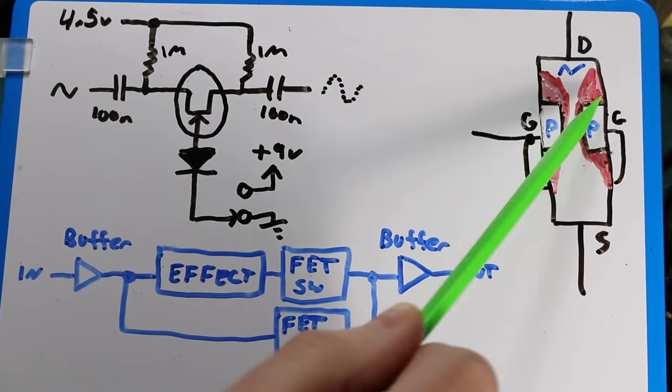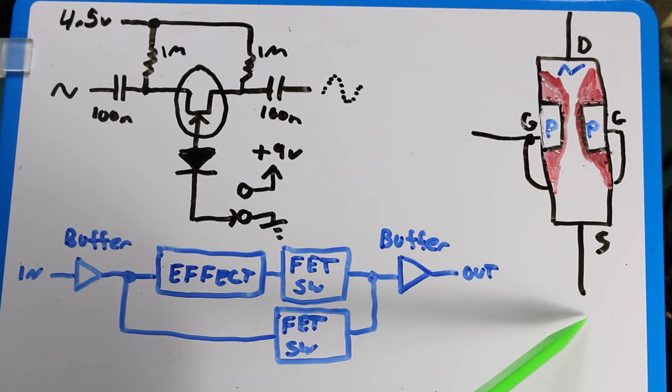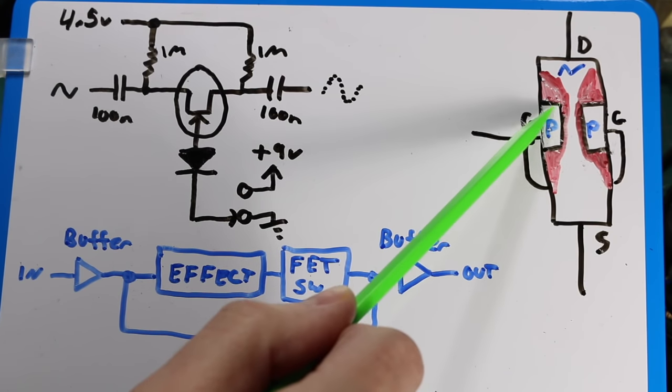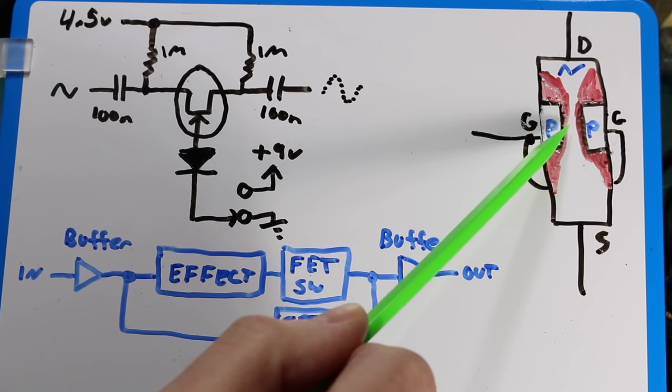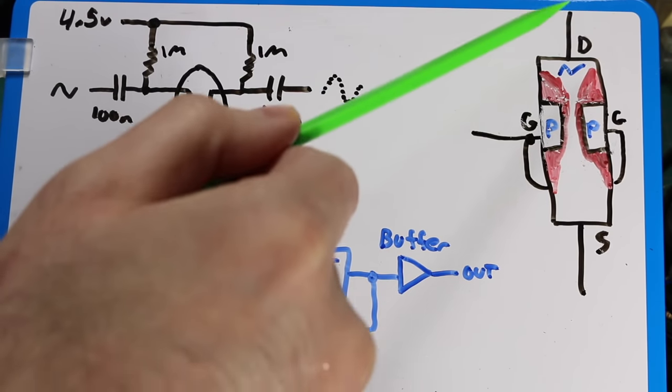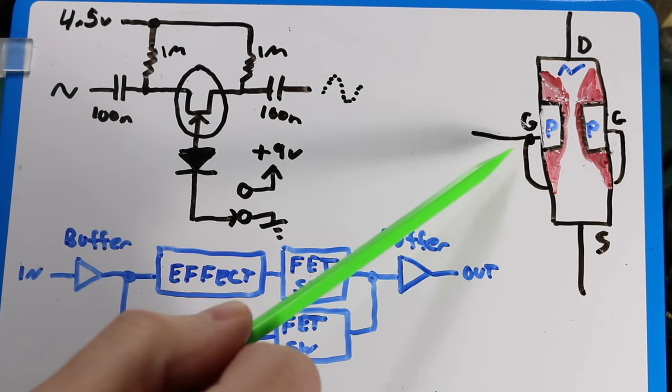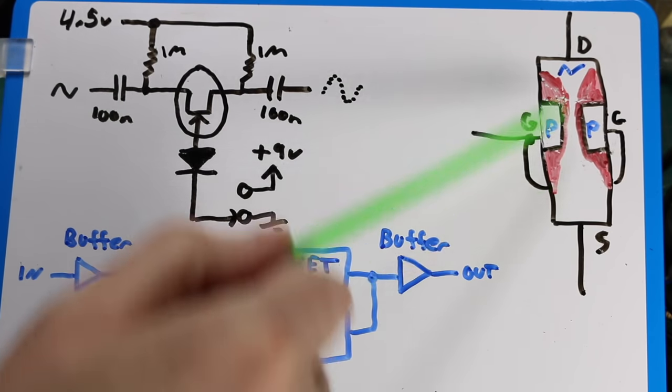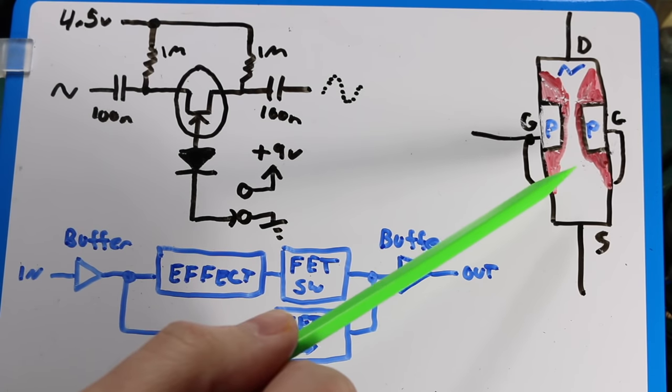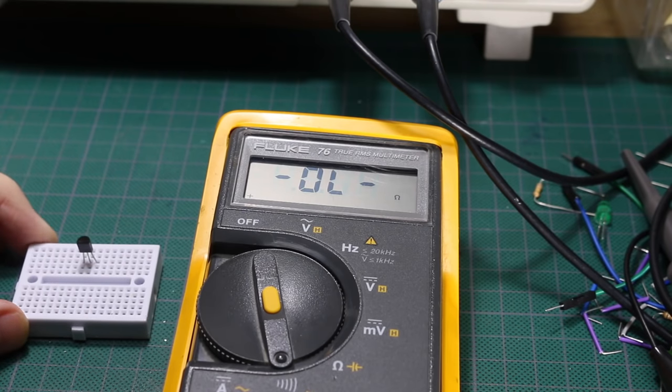To turn the FET off, blocking the conduction path between drain and source, we need to bring the gate a couple of volts more negative than the source to increase the depletion area so much that it cuts off the conduction path. Then you'll have a very high impedance for essentially an open circuit from drain to source. And when the channel is open, where there is no voltage difference from gate to source, these type of FETs might have an on-resistance one to two hundred ohms or so.